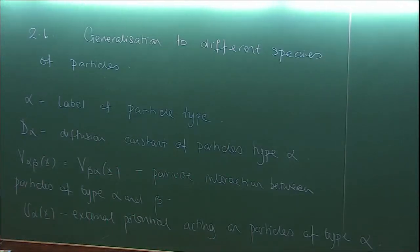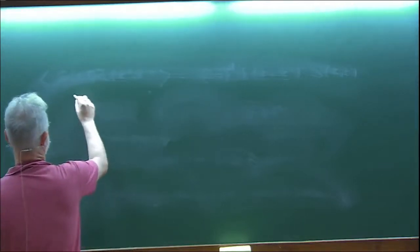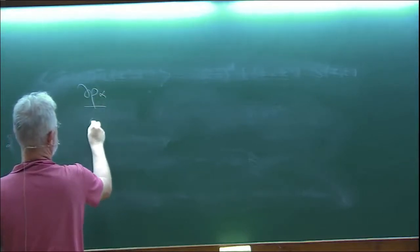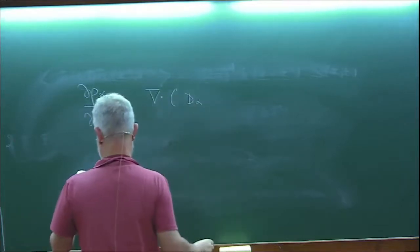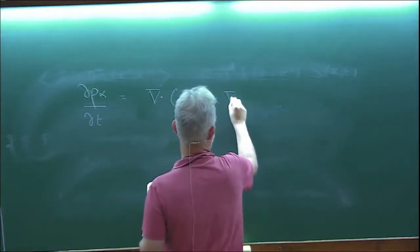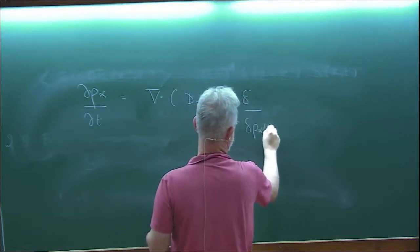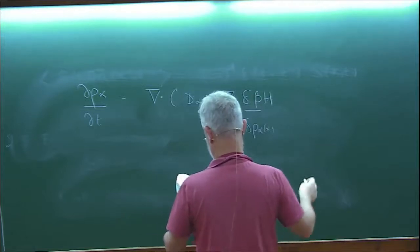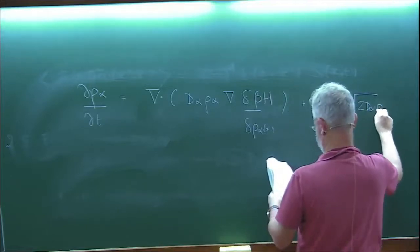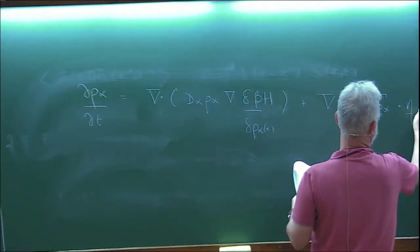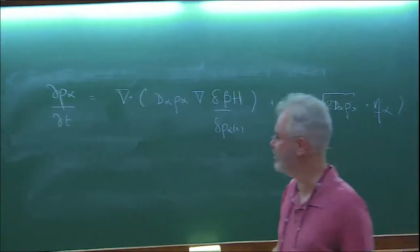This is one of the areas where this method is particularly useful. When looking at correlation functions, you now have indices α and β, so you have ρ̃_α ρ̃_β rather than just ρ̃². The SDFT equation for species α is: ∂ρ_α/∂t = ∇·[D_α ρ_α ∇(δH/δρ_α)] + ∇·[√(2D_α ρ_α) η_α], where η_α is the white noise field for species α.